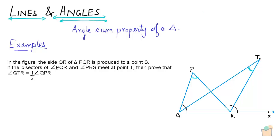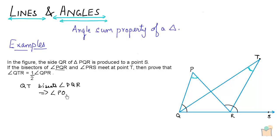Let's see how we can go about this. First of all, we know that QT bisects angle PQR. That means the two angles formed — PQT and TQR — are equal to one another. I can also say that angle PQR is equal to two times angle TQR, because this angle is equal to this angle, so the total angle PQR is two times this particular angle.